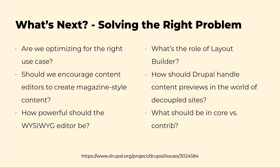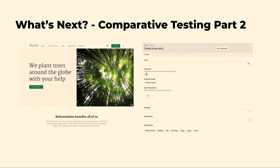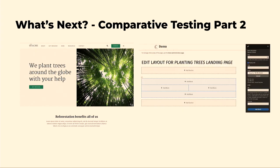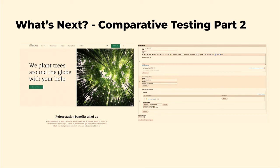Other next steps involve defining what kind of problem we want to solve in terms of content editing UI: are we building a UI that's best for structured content, or more flexible landing page-style content, or both? One of my next steps as part of the UX study is a second stage of comparative testing — looking more at creating content beyond just articles, like how would a content editor create a landing page? Comparing other content management systems but also Drupal — how would someone create this with the layout builder or with paragraphs?